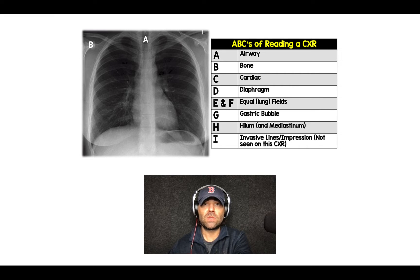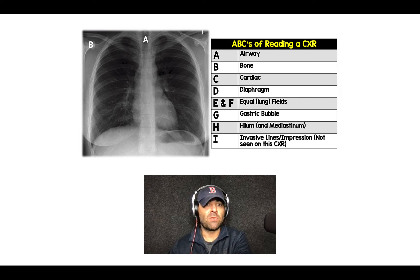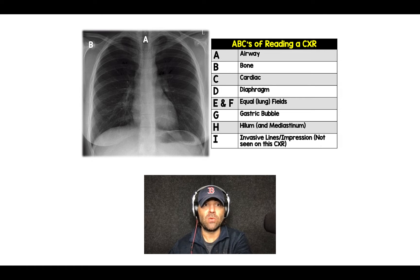B is bones, and so you want to look at the ribs. You want to make sure there's no fractures — the clavicles, anything that could potentially be from trauma. You want to make sure that you have excluded and not gotten distracted by something else on the chest x-ray.